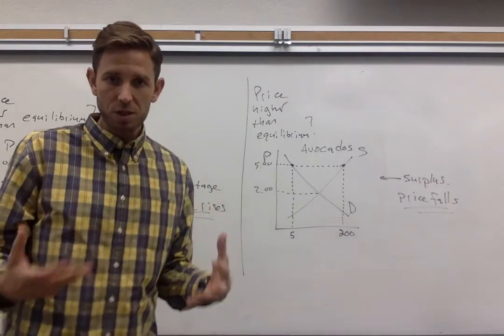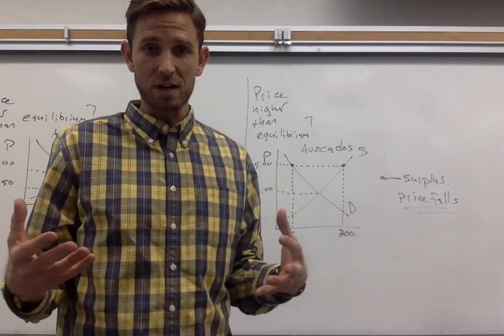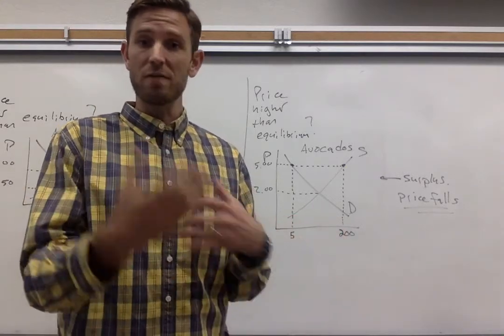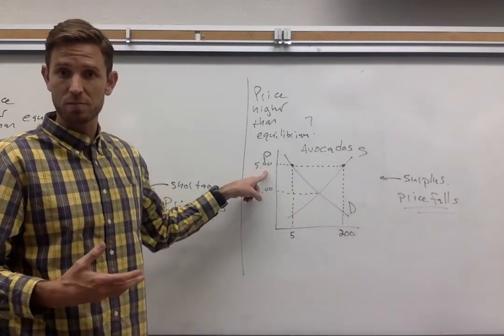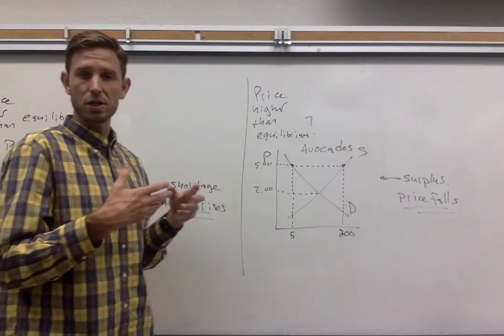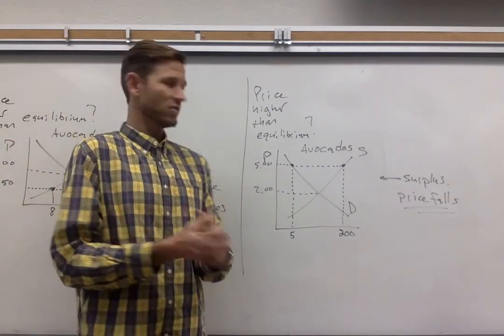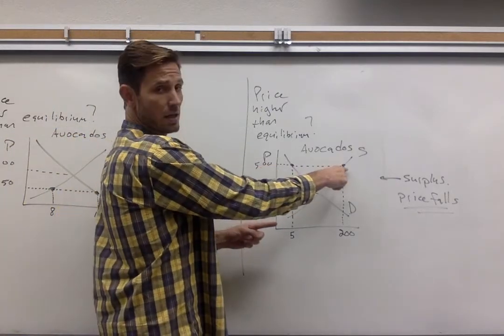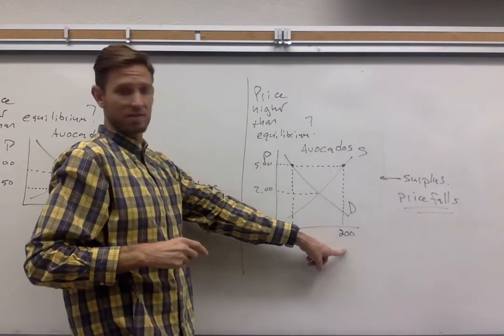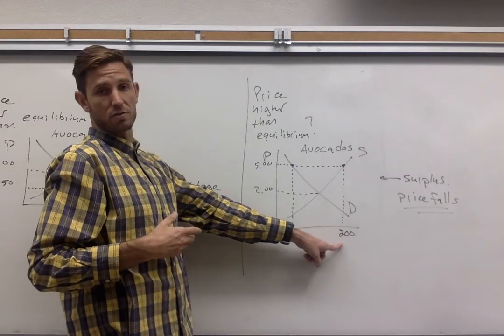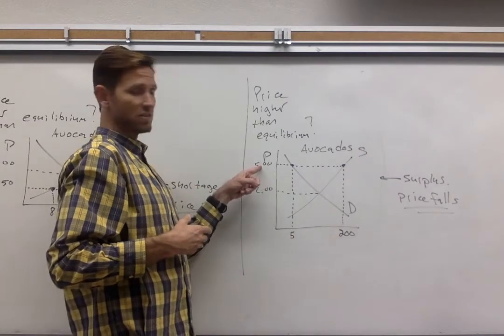Your intuition should tell you that sellers are going to think this is great. Those people selling avocados are going to do everything that they can to bring avocados to market because you can make some money. You can make some profit if you're able to get your product sold for a higher price. Correspondingly, the quantity supplied at a price of five bucks is some large amount. This is saying 200 avocados are available for sale if the price is five bucks.